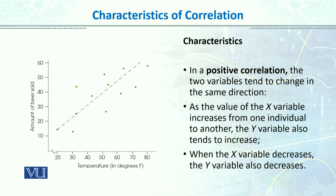You can see that this is temperature in degrees and this is the amount of beer sold. This example is from the Gravator textbook, which I am using for these lectures. Here you can see that if temperature is increasing, the consumption of beer is also increasing. If the temperature is around 20, the amount is less, but if it is around 80, the amount is also increasing. This is called a positive correlation — when one is increasing, another is also increasing.